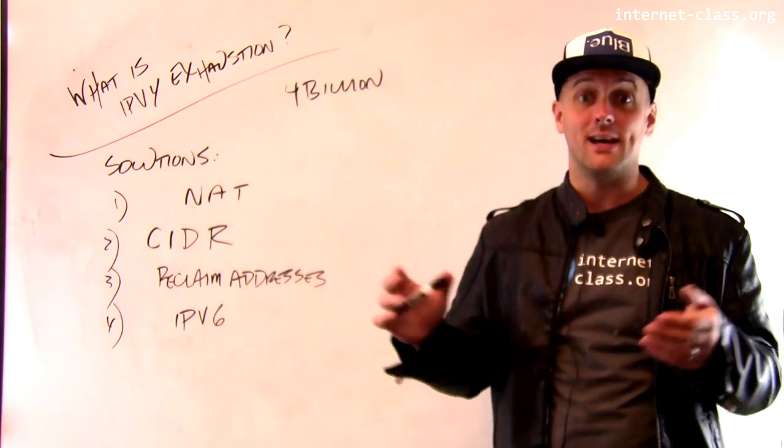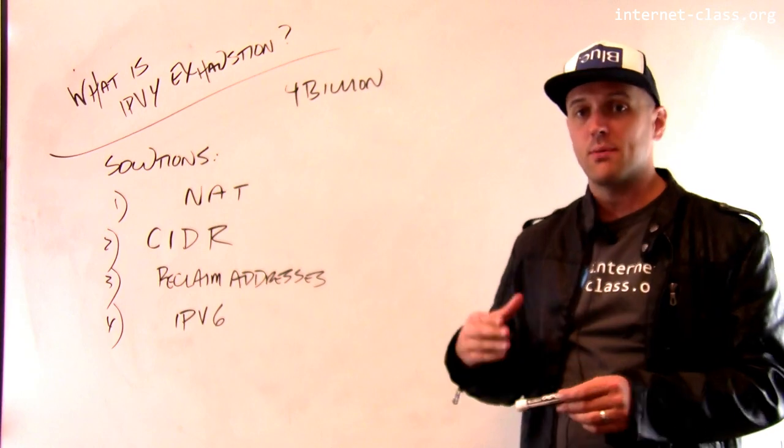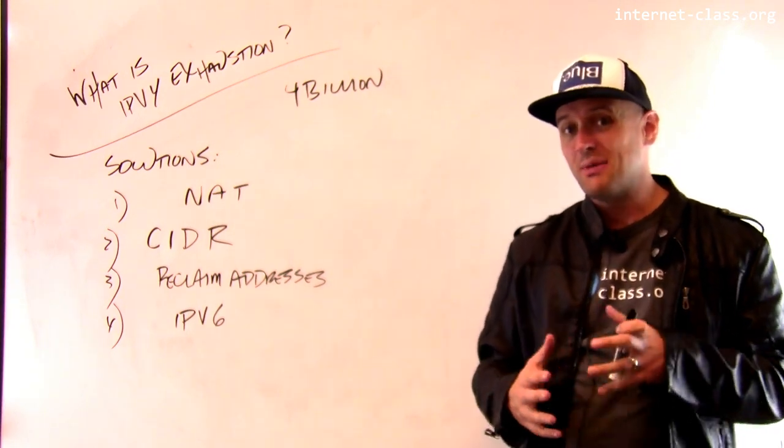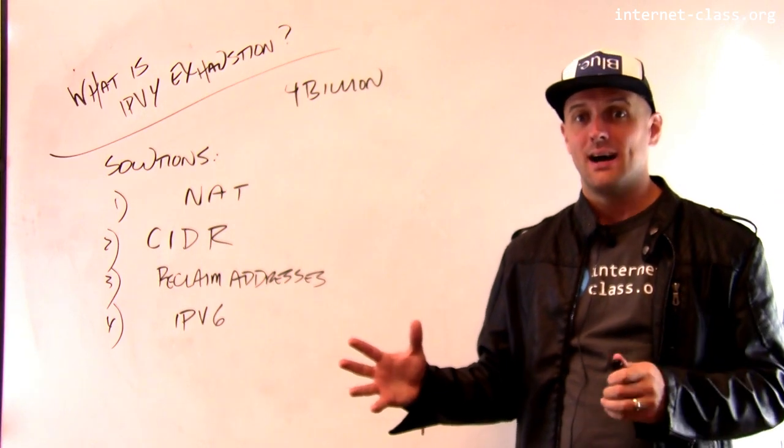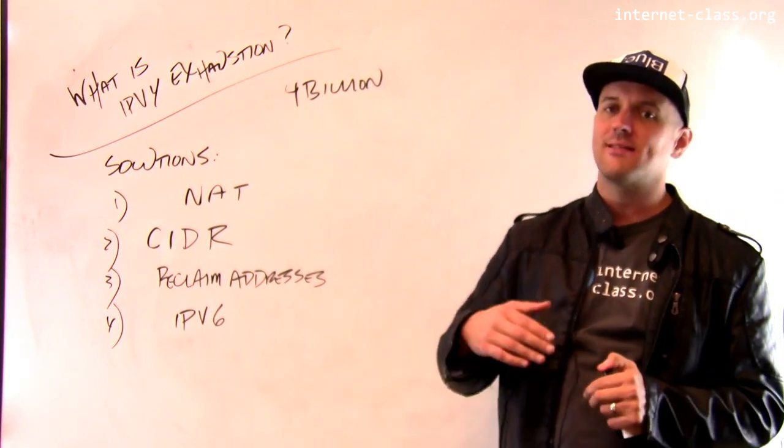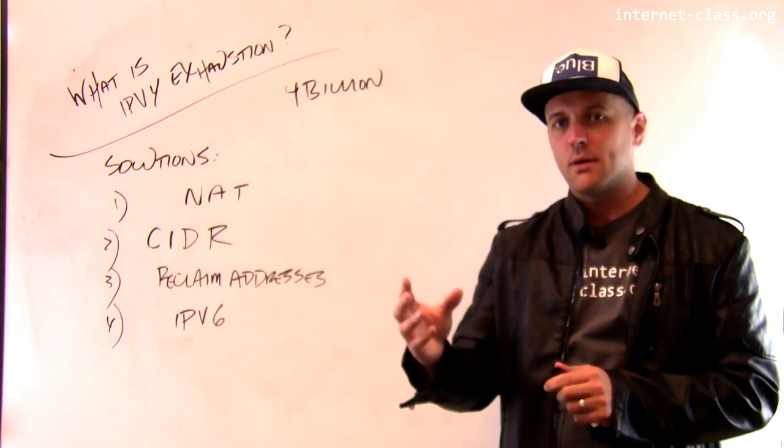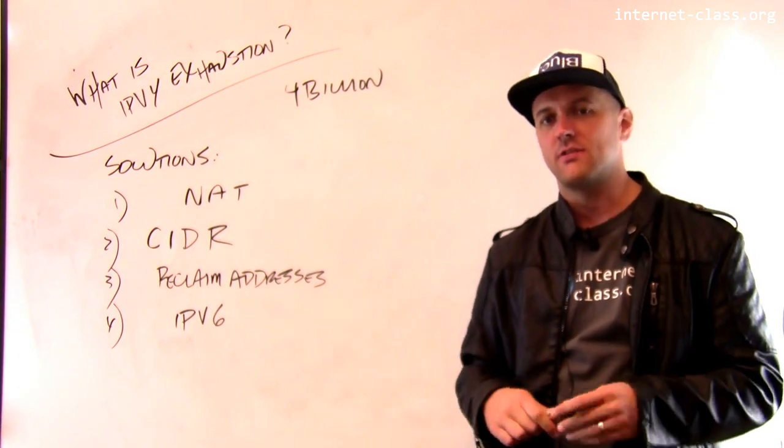We're out, basically. I mean, today we have a problem that's known as IPv4 exhaustion. So the IPv4 address space is pretty much completely allocated. Now, here's the problem. It's not necessarily perfectly allocated. Not every valid IP address out there is in use.